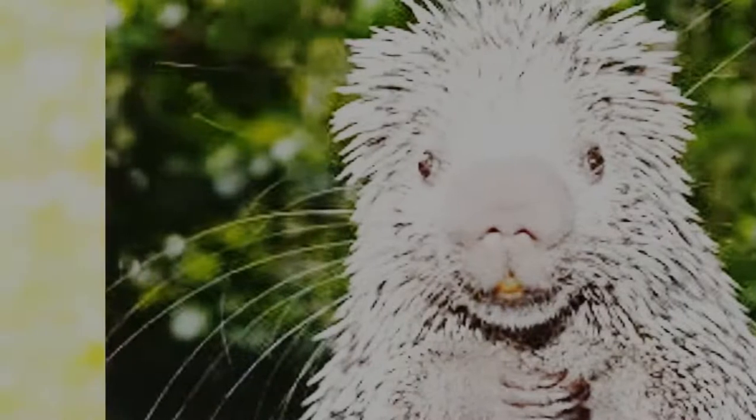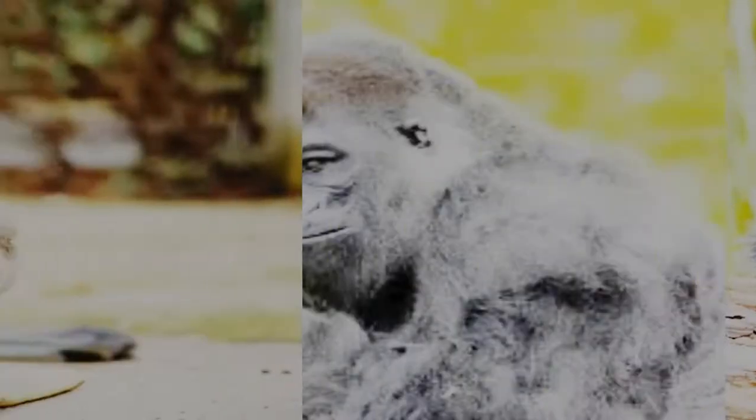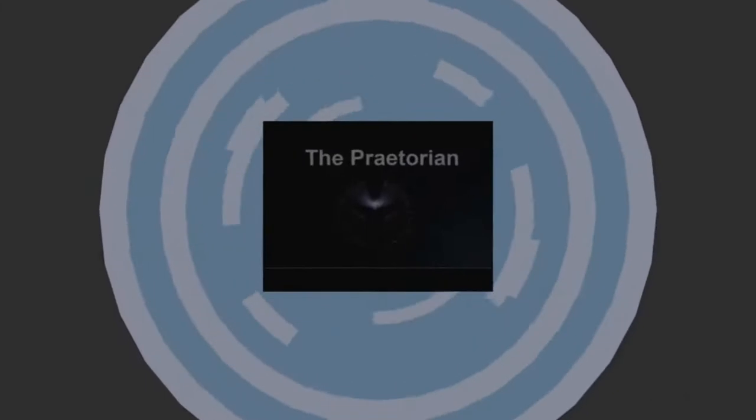Many traditionally defined species, defined based only on morphological similarity, have been found to be several distinct species when other criteria such as genetic differentiation or reproductive isolation are applied. A more restricted use applies the term to close species between which hybridization occurred or is occurring, which leads to intermediate forms and blurred species boundaries.